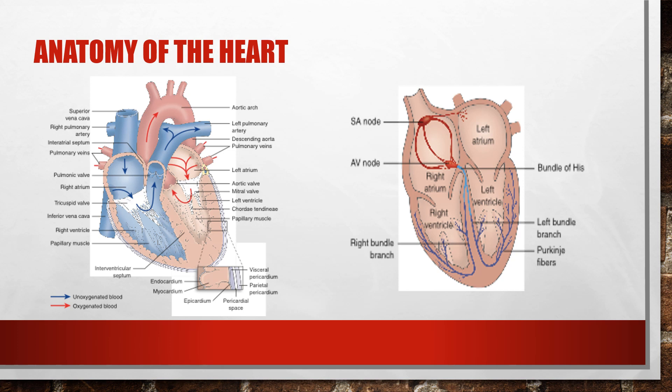The heart has four chambers: two atria on the top of the heart and two ventricles on the bottom. We can divide these into right side and left side. The right side takes deoxygenated blood from the body and pumps it into the lungs to get oxygenated. From the lungs, the oxygenated blood goes to the left side of the heart where it gets pumped out to the rest of the body.